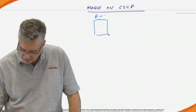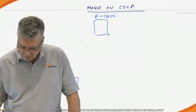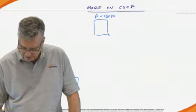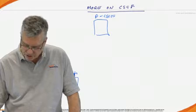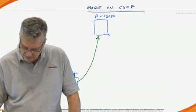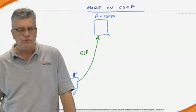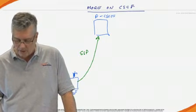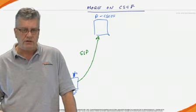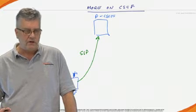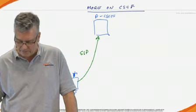So we have the proxy CSCF. If you recall, when a UE is going to send SIP messages to the IMS network, those messages will traverse the LTE network. The UE is always going to send any SIP message to the proxy CSCF and conversely any SIP message received by the UE will always come from the proxy CSCF.